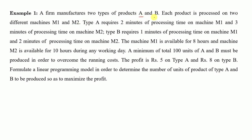A firm manufactures two types of products A and B. Each product is processed on two different machines M1 and M2. Type A requires 2 minutes on M1 and 3 minutes on M2. Type B requires 1 minute on M1 and 2 minutes on M2. Machine M1 is available for 8 hours, M2 for 10 hours, and a minimum of 100 units of A and B must be produced to overcome running cost. The profit is rupees 5 on A and rupees 8 on B.